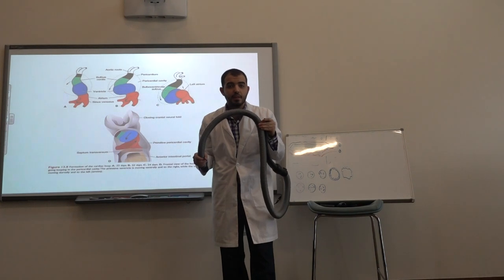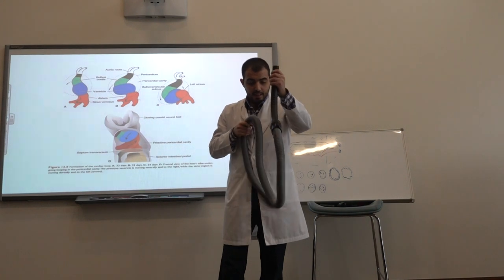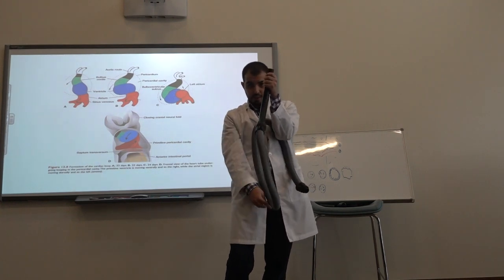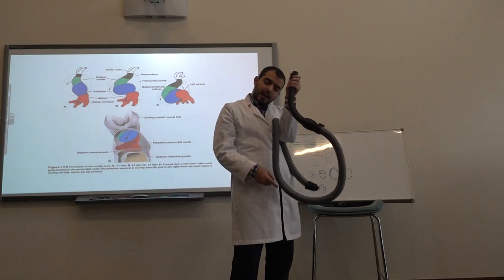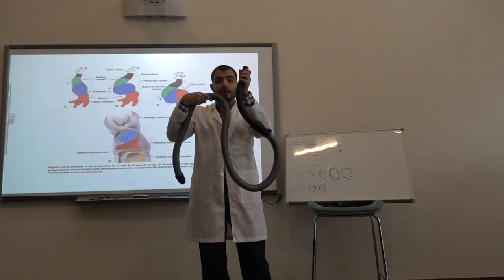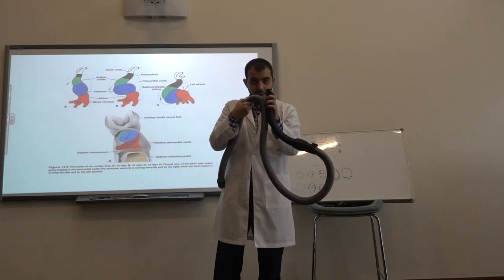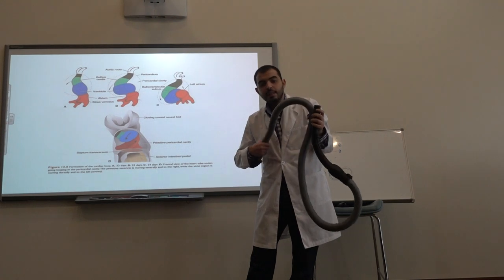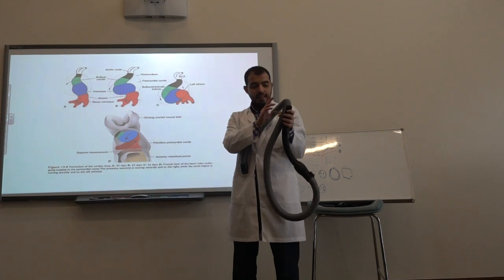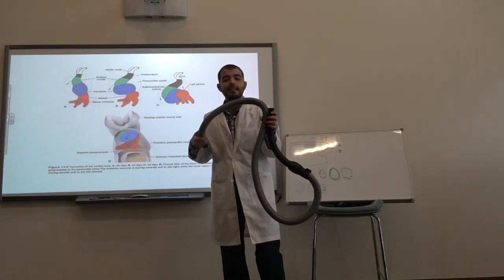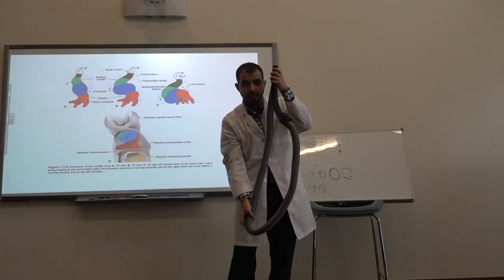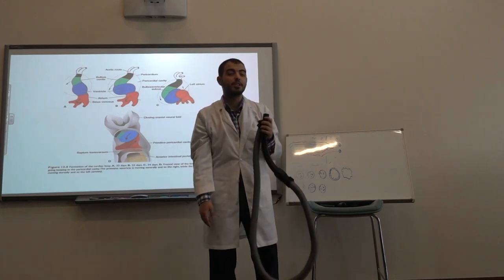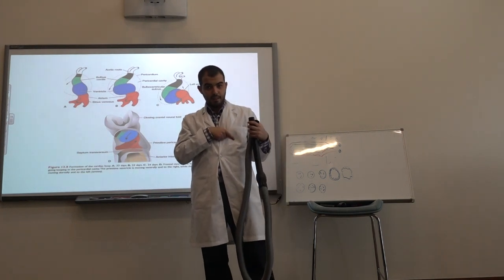This is called the S-phase of the heart loop. Now naming the parts: the top of the S is the bulbus cordis; the loop that moved anteriorly and caudally is the ventricle; and after the ventricle comes the atrium — which is now above the ventricle. That is how the atrium ends up above the ventricle. The remaining end is the sinus venosus.